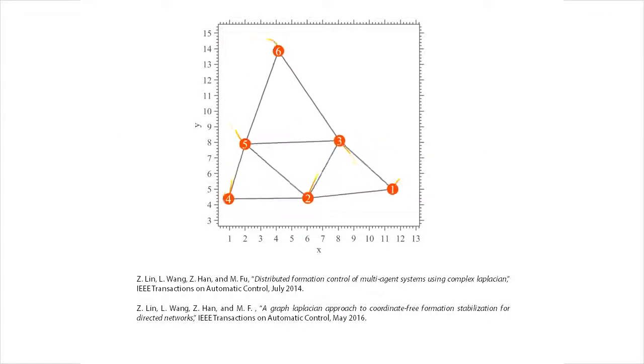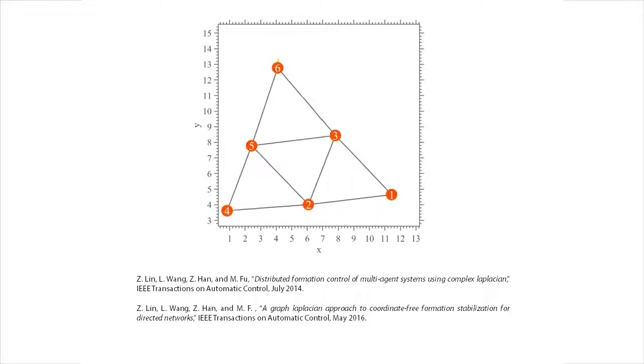Our proposed control approach is inspired by Lin et al, which is based on a linear design. To understand this approach, consider three agents and assume that agents 2 and 3 are neighbors of agent 1. This means that agent 1 can measure the relative position of agents 2 and 3 in its local coordinate frame.